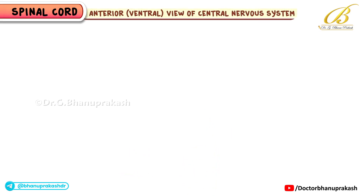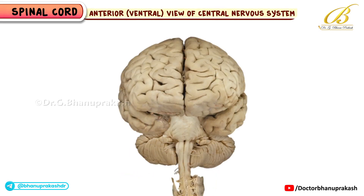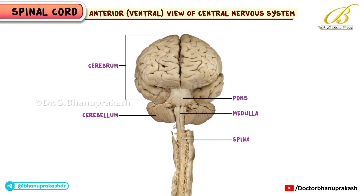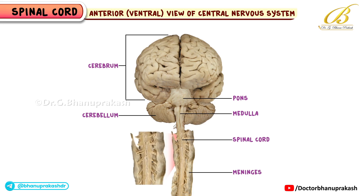Now we have an anterior, ventral view of the central nervous system. The cerebrum, cerebellum, pons, medulla, and the spinal cord are clearly visible. In this dissected view, the meninges that surround the spinal cord have been removed in sections, exposing the nerve rootlets.